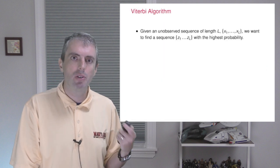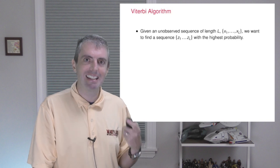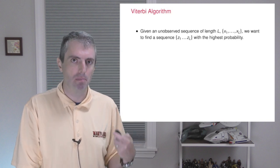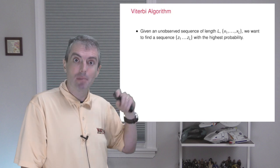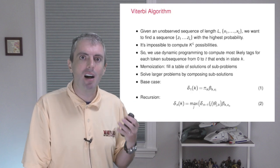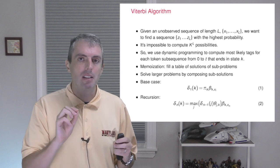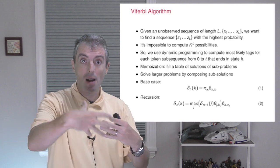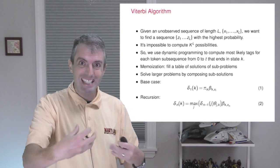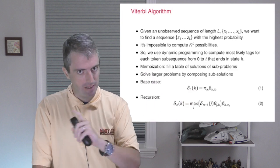What the Viterbi algorithm allows you to do is to take a sequence of words x1 to xl and to find out the sequence of part-of-speech tags that give you the highest probability given the observation of the underlying words. It's impossible to compute all of the k to the l possible sequences, so what we're going to do instead is to use dynamic programming to compute the best probability for any subsequence going from 0 to time t that ends in a particular state k.